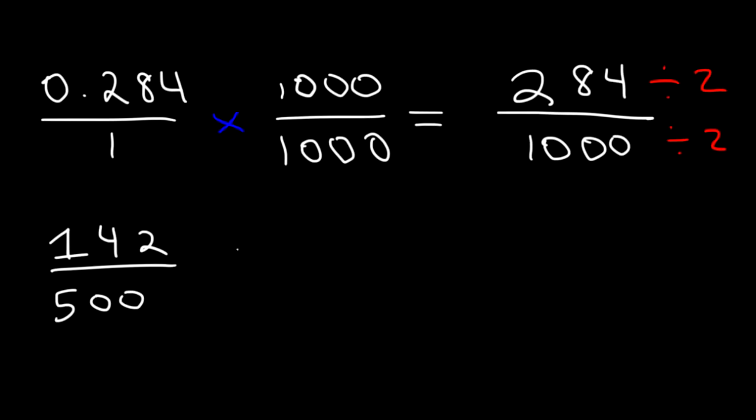So, we still have even numbers. We can divide it again by 2. Half of 14 is 7, half of 2 is 1. So, half of 142 is 71. Half of 500 is 250. And at this point, we can't reduce it any further. 71 is not divisible by 2 or 3. And so, that's the answer. It's 71 over 250.